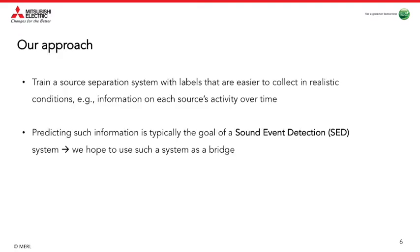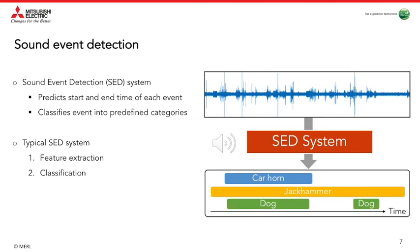In this work, we aim at training a separation system with labels that are easier to collect, such as information on the type of sound events and the time of their occurrence in a given recording. Estimating this type of information is the goal of a whole other branch of audio research called sound event detection. We take advantage of this technology to bridge the gap between strongly supervised and weakly supervised audio separation. Sound event detection refers to the task of predicting the start and end times of a sound event and identifying the category to which the sound event belongs.